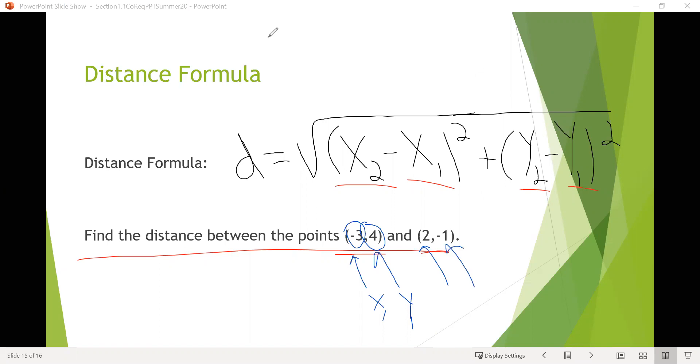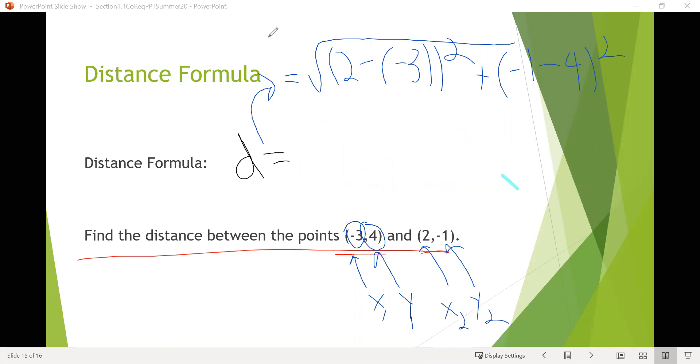I'll call these two here x2 and y2. We can put this information in the distance formula. We get this equals square root x2, which is two minus x1, which is negative three. Notice I put the negative three in parentheses, as we talked about before, plus the y2 would be negative one minus y1, which is four squared.